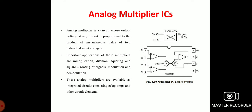An analog multiplier is a circuit whose output voltage at any instant is proportional to the product of the instantaneous values of two individual input voltages. Important applications include multiplication, division, squaring, square rooting of signals, and modulation and demodulation. These analog multipliers are available as integrated circuits consisting of operational amplifiers and circuit elements.